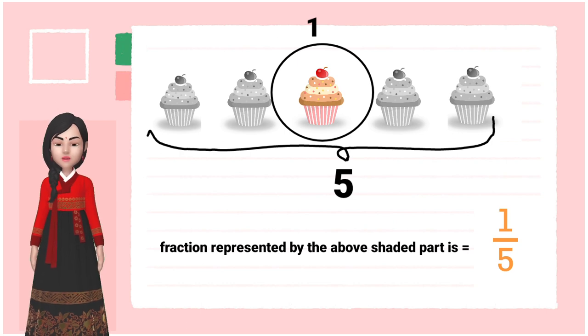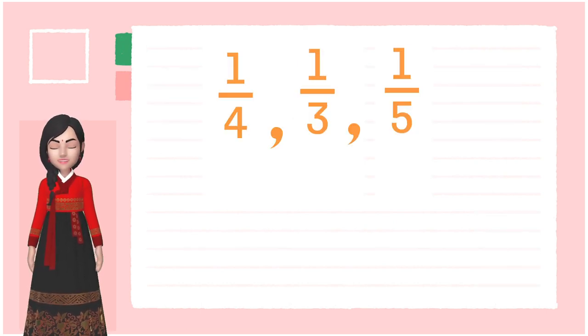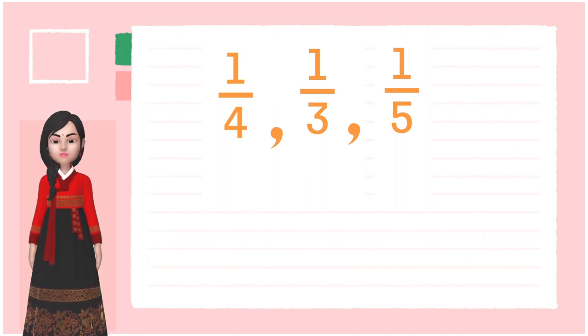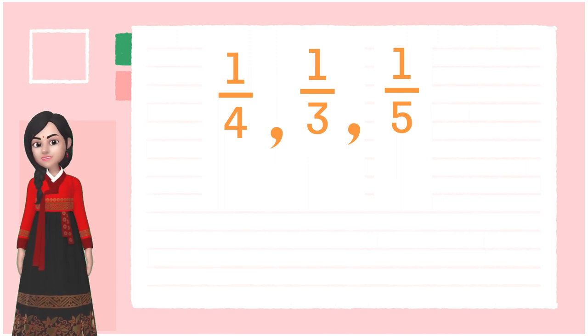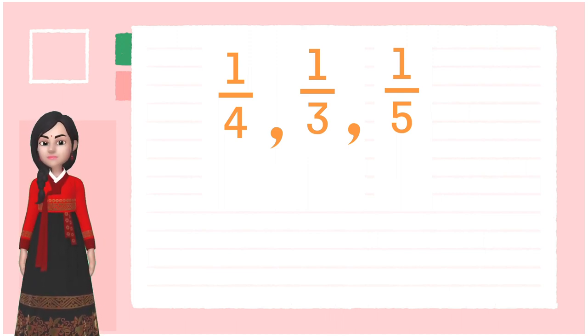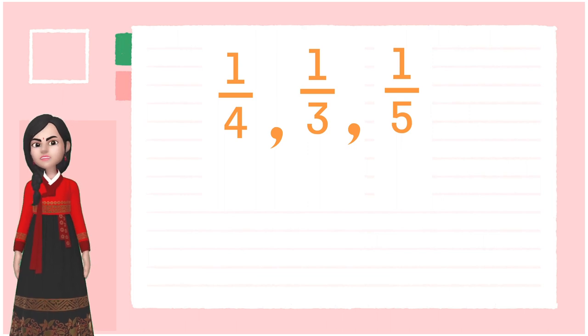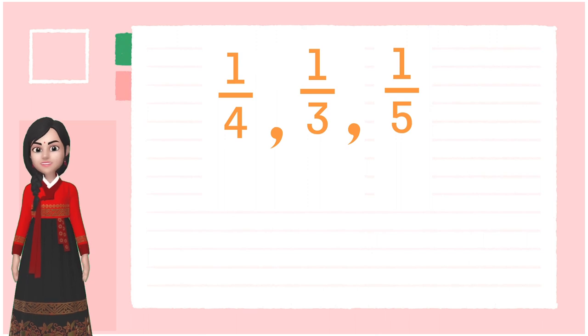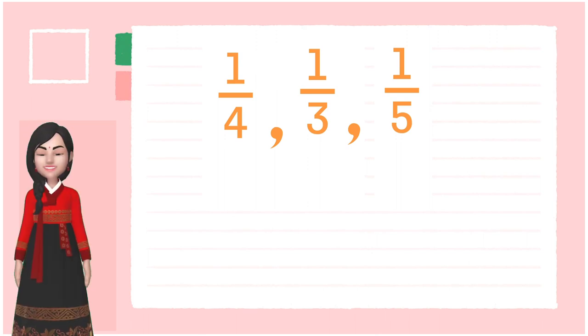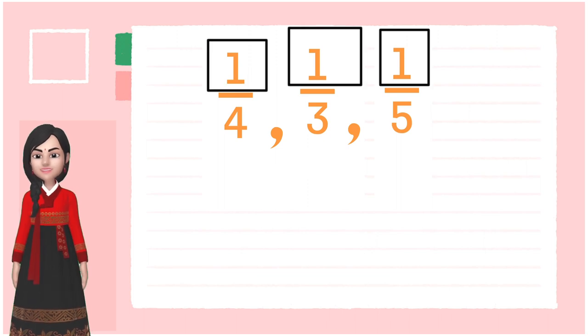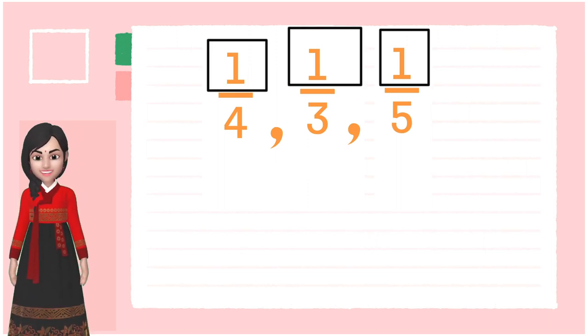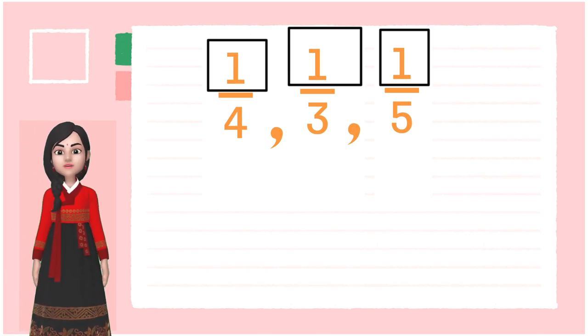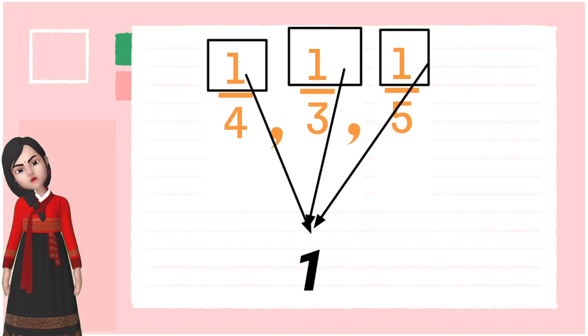Now, observe all these fractions. One by four, one by three, one by five. I will ask two questions. Listen carefully and answer them. What do you observe in all the above fractions? How many parts are colored in each of the figures? Yes, one part is colored. Do you find anything in common in all the fractions? Yes, the numerator is one for all the fractions. These are called unit fractions.